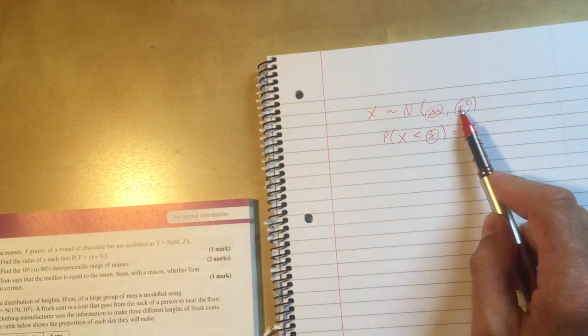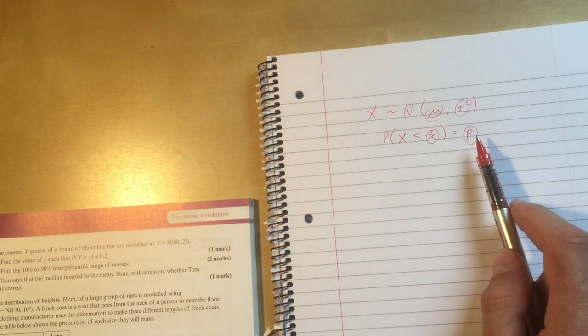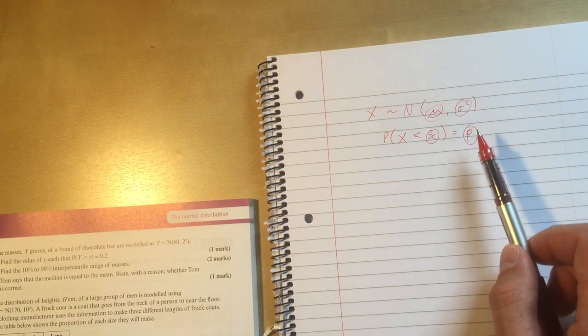And so far it's been straightforward. You've always been given mu and sigma. We've learned how to work out p if they tell you x. We've learned how to work out x if they tell you p.